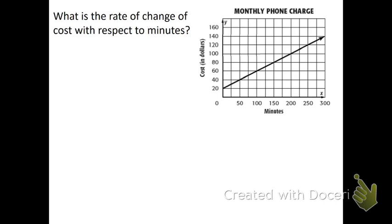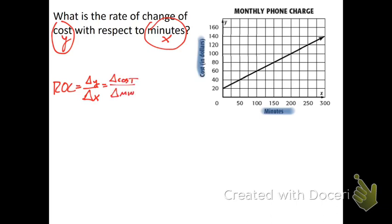In this one, what is the rate of change of cost with respect to minutes? So that tells us that cost is our y, minutes is our x. Once again, if we didn't know that, we could tell from here. Cost is on our y-axis, minutes is on our x-axis. So if I'm trying to find the rate of change, that's going to be the change in y over the change in x. Probably something like a broken record by this point. But that means we are looking for the change in cost over the change in minutes.